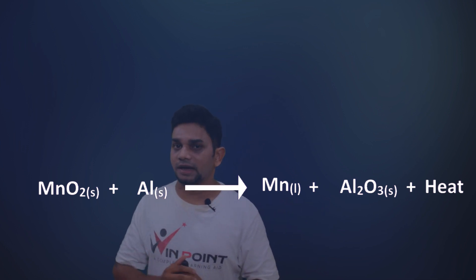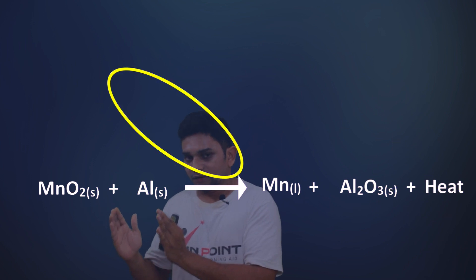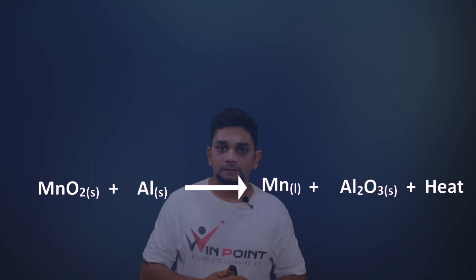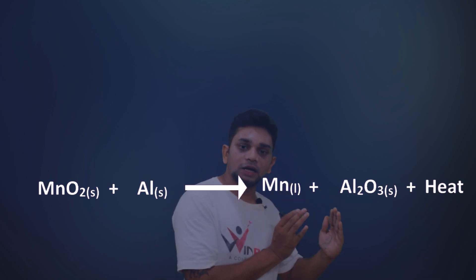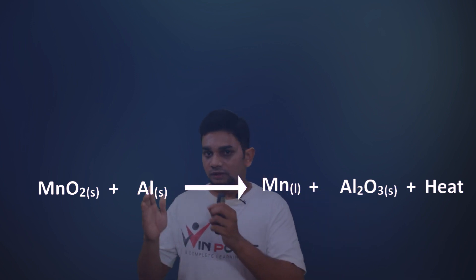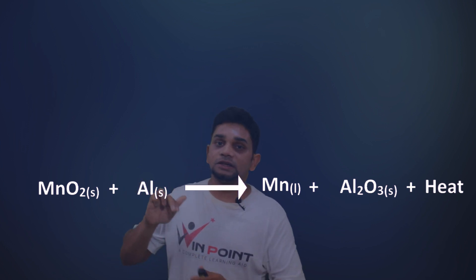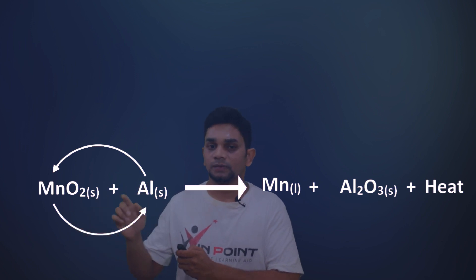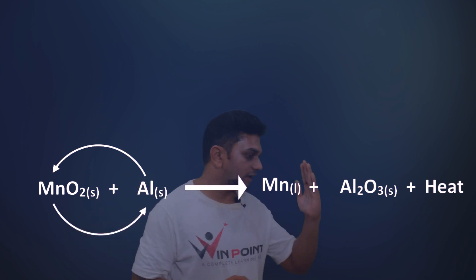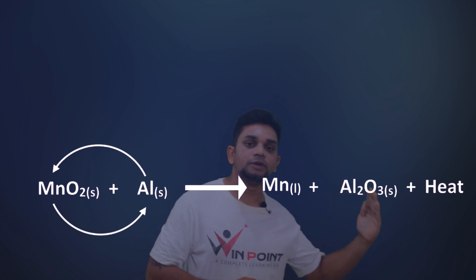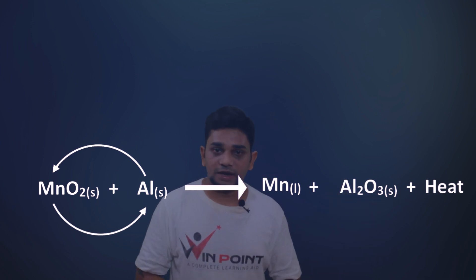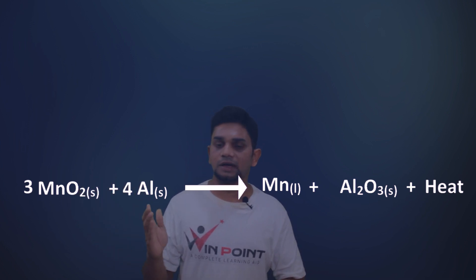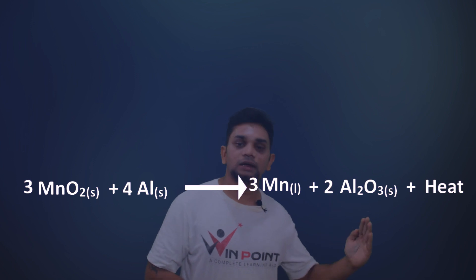This is a displacement reaction because aluminium is replacing manganese. On the reactant side we have MnO₂ and Al; after the reaction we get Mn and Al₂O₃. Aluminium displaces manganese, so manganese is obtained alone and aluminium forms aluminium oxide. The balanced equation is: 3MnO₂ + 4Al → 3Mn + 2Al₂O₃.